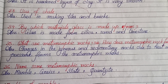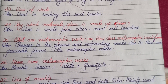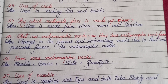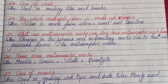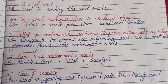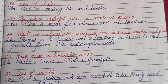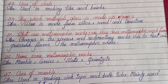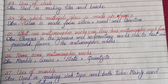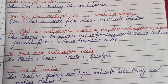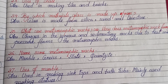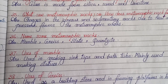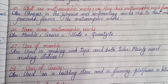By which material is glass made up of? Glass is made up of silica sand and lumps of limestone. What are metamorphic rocks or how does metamorphic rock form? Changes in igneous and sedimentary rocks due to heat and pressure form the metamorphic rocks. Names of metamorphic rocks: marble, gneiss, slate, quartzite.